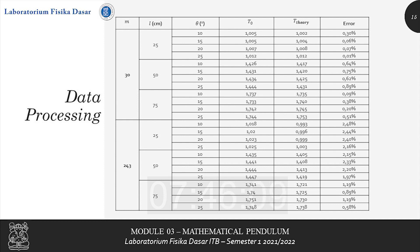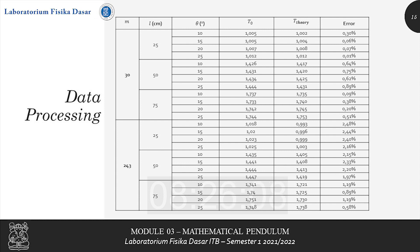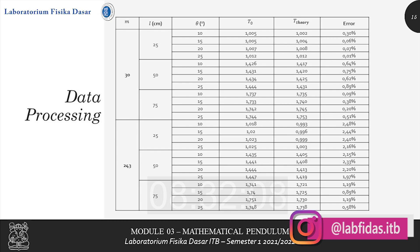The main table for experiment two contains mass variations, and for each mass variation there are three length variations, and for each mass-length combination there are four different theta values. The column t0 contains the period you collected with the stopwatch, while t_theory is the period calculated using the correcting-factor formula. After acquiring both t0 and t_theory, you calculate the error by finding the absolute difference between t0 and t_theory. That concludes the data processing section.